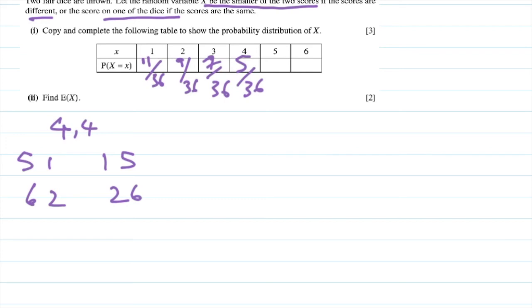We still have two more. The lowest score here is five, so it's five-five, six-five, five-six. That's three over thirty-six. And finally, the smallest score is six. There's only one way of getting it, which is the same score, six-six. So it should be one over thirty-six.